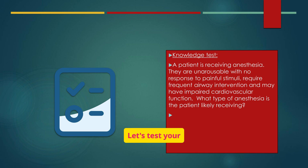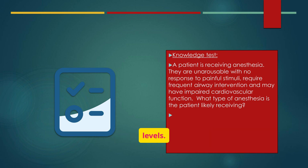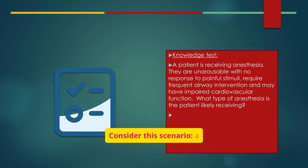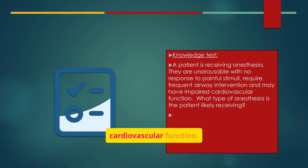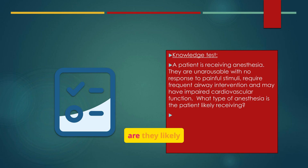Let's test your understanding of anesthesia levels. Consider this scenario: a patient is unarousable, requires airway intervention, and has impaired cardiovascular function. What level of anesthesia are they likely receiving?